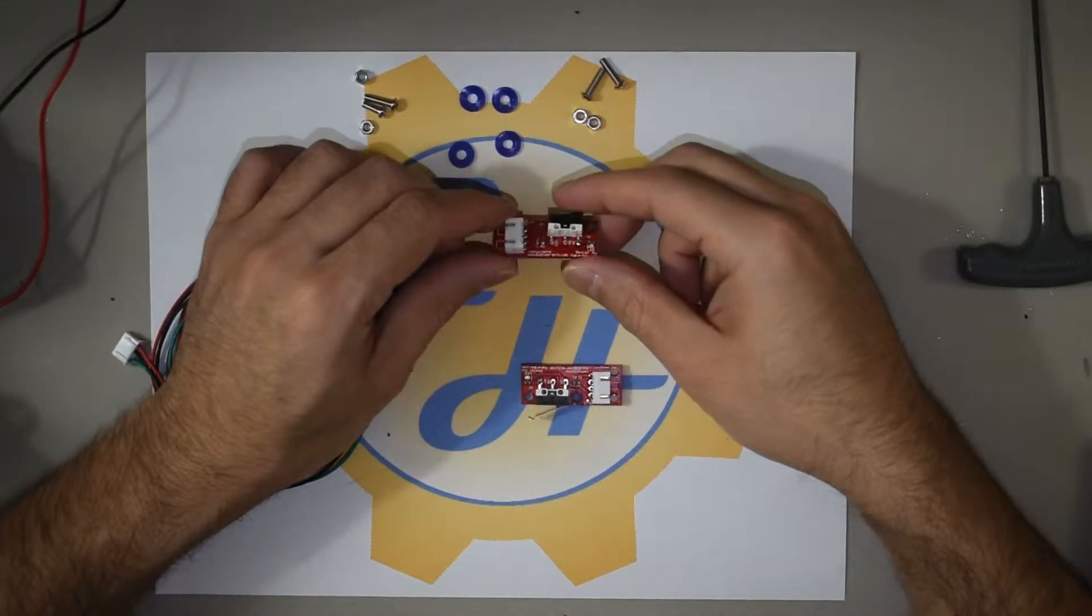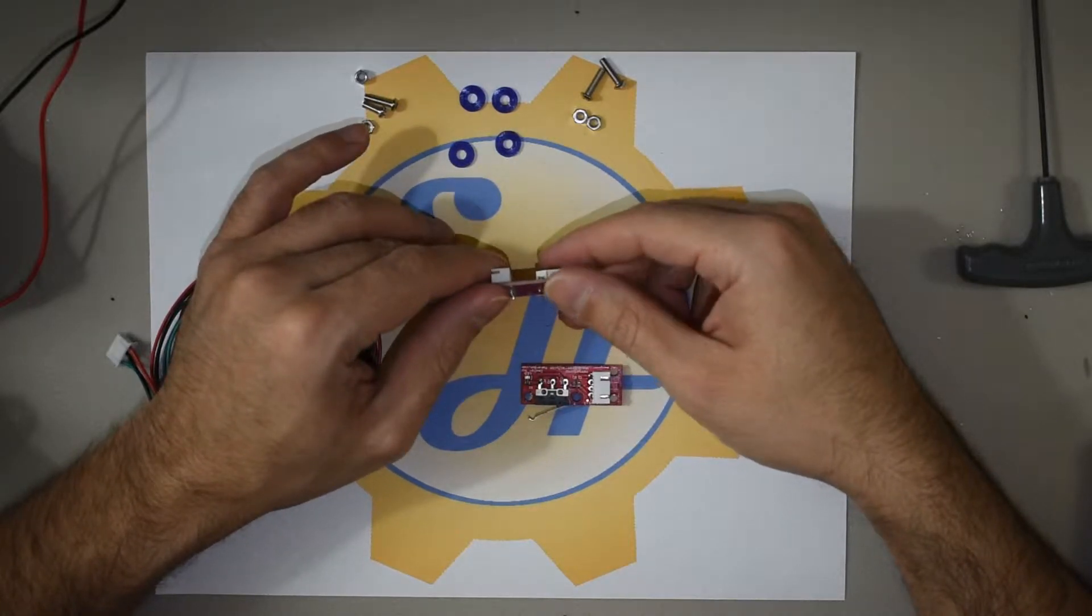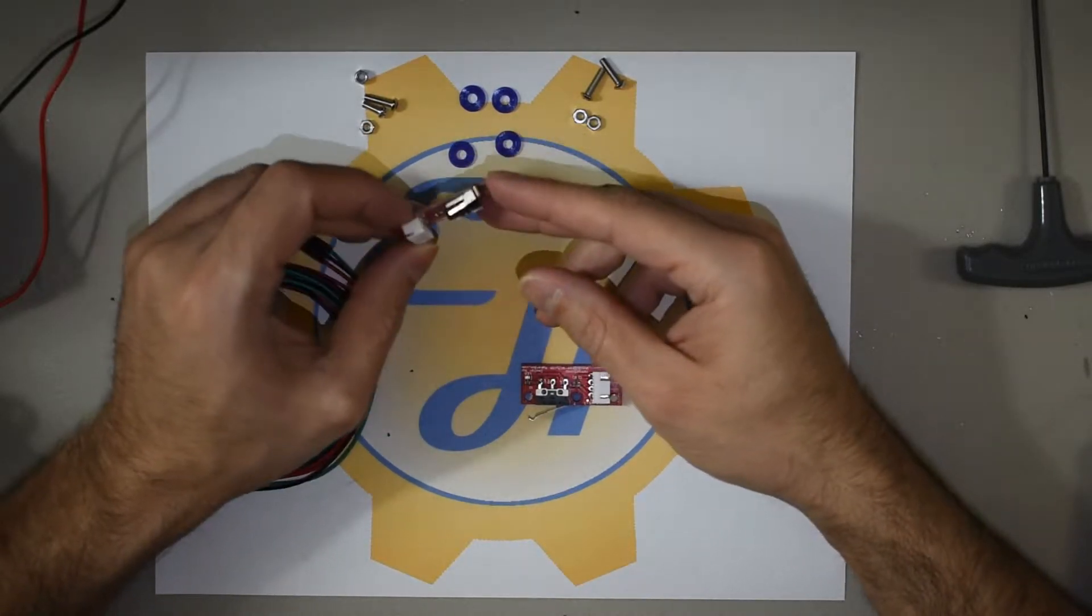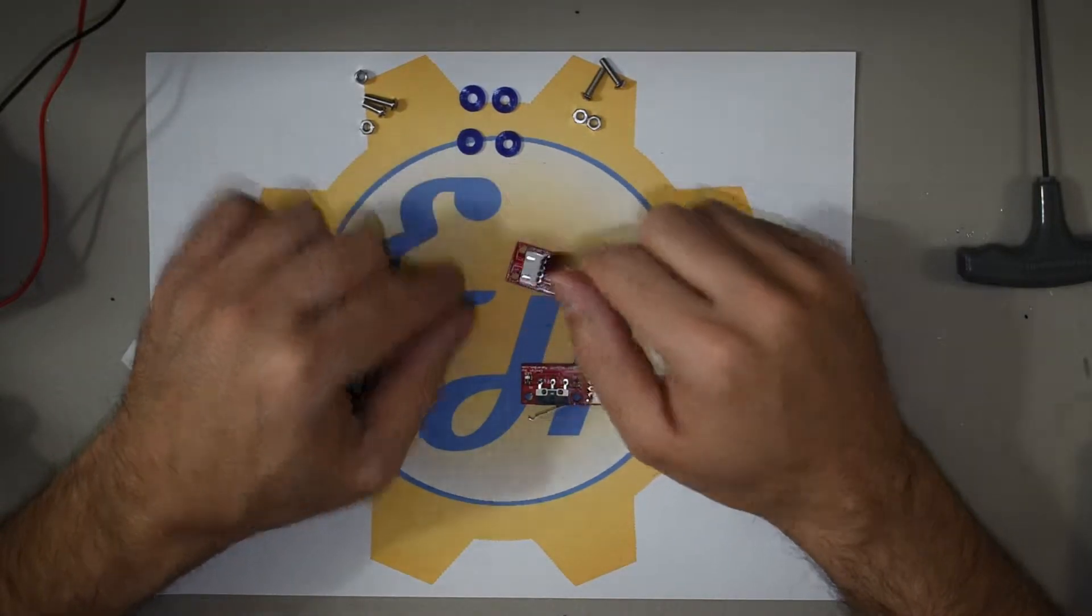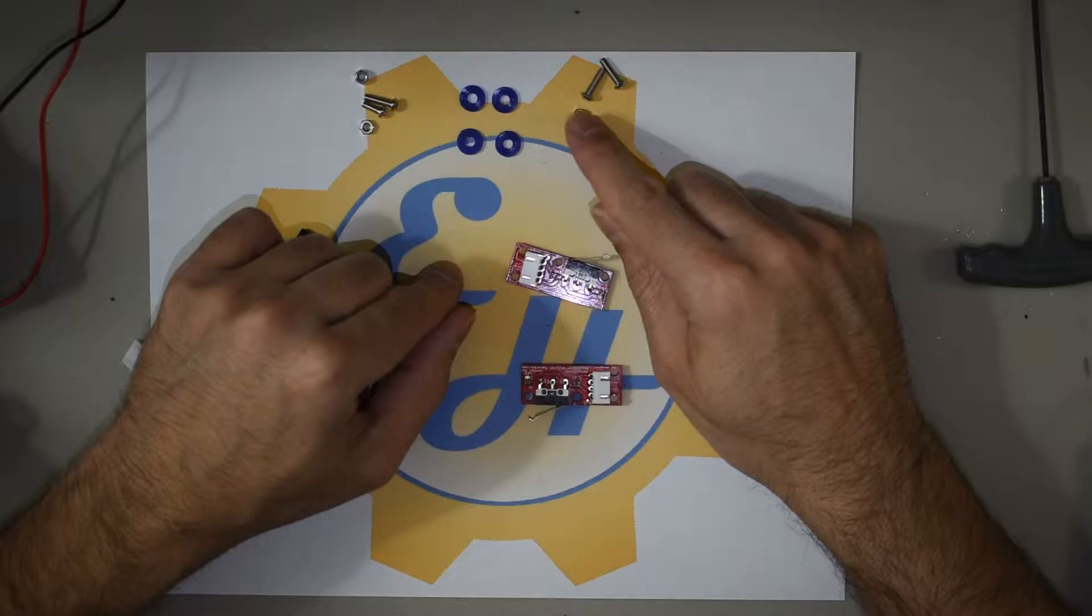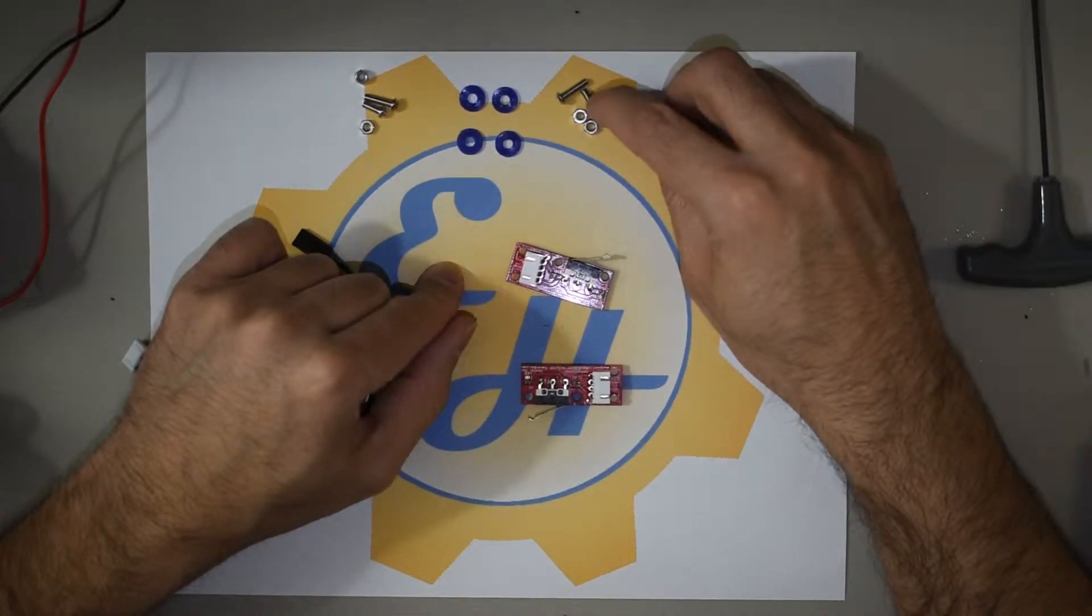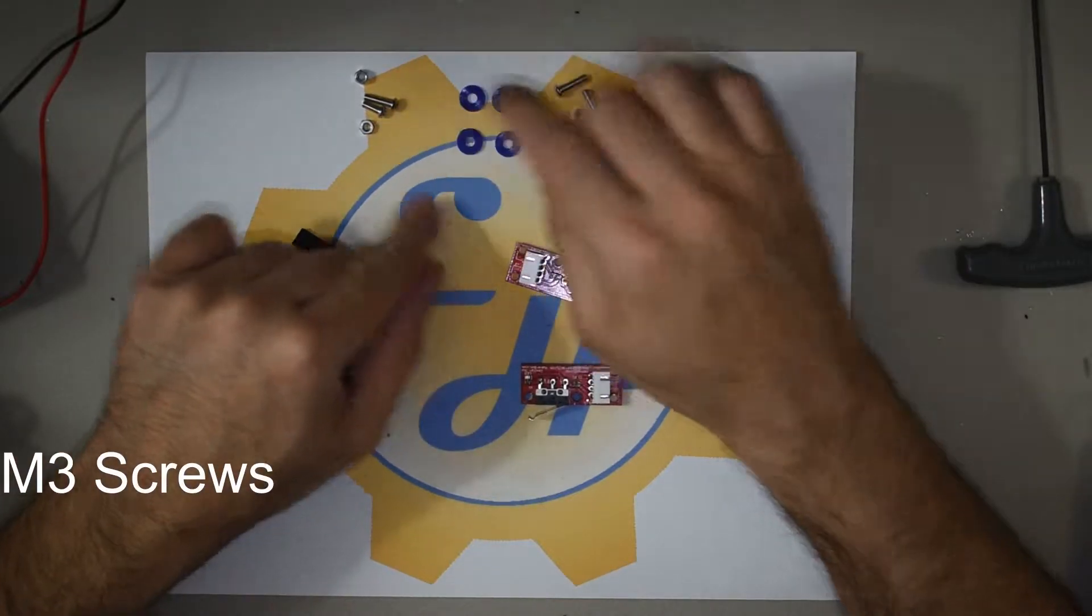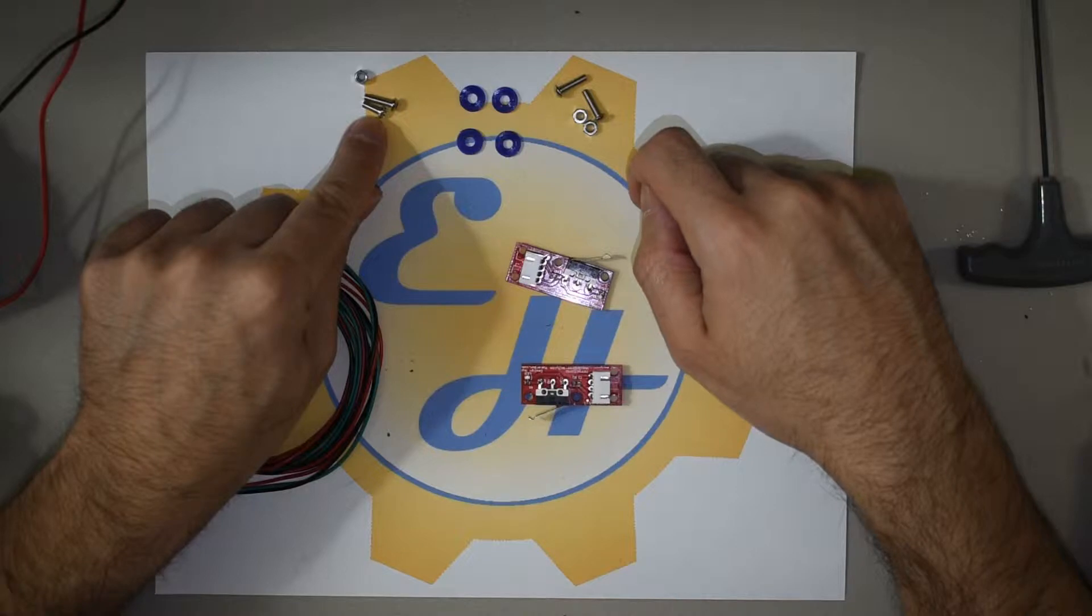You're going to need two end stops, the types that you use on 3D printers or CNC machines. You're going to need four of the small spacers and the screws per the specifications. These are three millimeter screws. This one's a little shorter and I'll explain why.